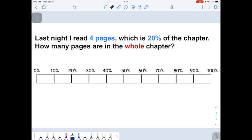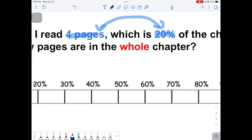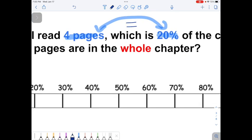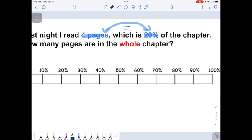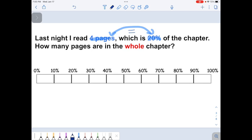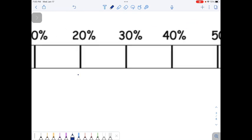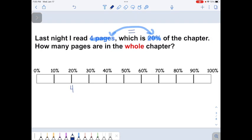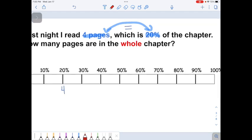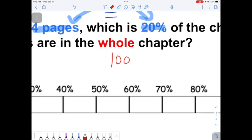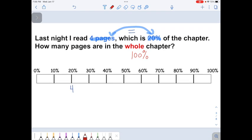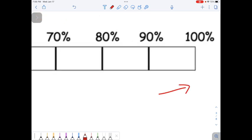Last night I read four pages, which is 20% of the chapter. You can see that those are color-coded. It's saying which is, which means four pages equals 20%. I'm going to go down to my percent bar, find 20%, and write four down below. Now, the question at the end says, how many pages are in the whole chapter? What does 100% equal? So I need to find the number way here at the end that goes right underneath 100%.